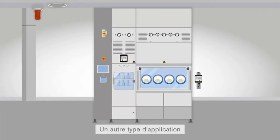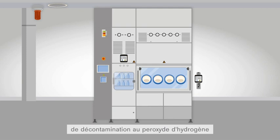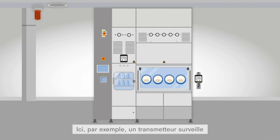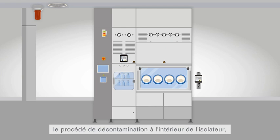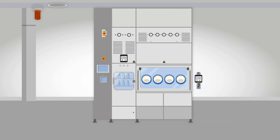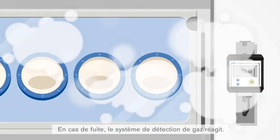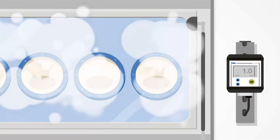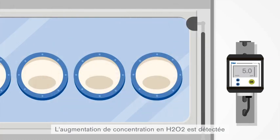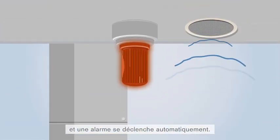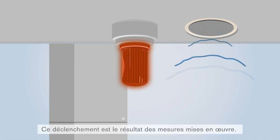A further application scenario for decontamination with hydrogen peroxide is the usage in insulators. Here, one transmitter monitors the decontamination process inside the insulator, while another is arranged adjacent to the insulator to detect leaks. If there is a leak, the gas detection system responds: the increasing H2O2 concentration is detected and an alarm is automatically triggered.